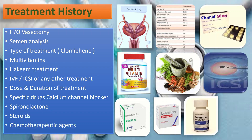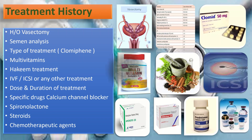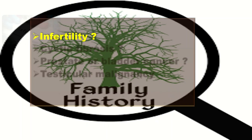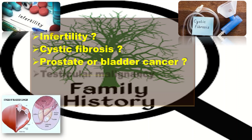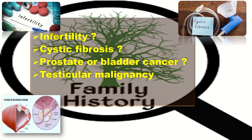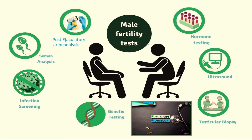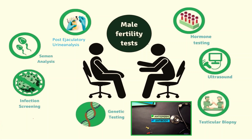In the family history, ask about family history of infertility, cystic fibrosis, prostate or bladder cancer, and testicular malignancy. Now moving to investigations for the male partner: the initial test is semen analysis, which examines sperm concentration, motility, morphology, and other important factors.